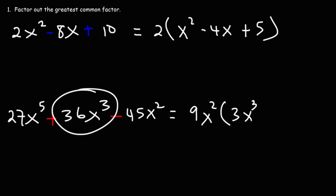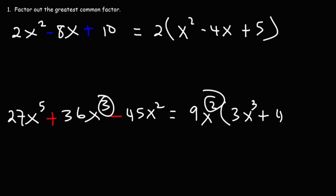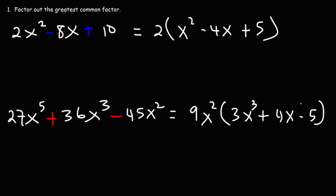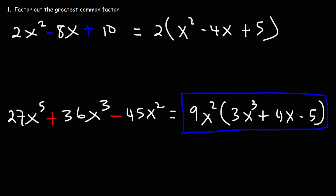Dividing 36x cubed by 9x squared: 36 divided by 9 is 4, and x cubed divided by x squared gives us x to the 1st, so we get 4x. Then negative 45x squared divided by 9x squared: negative 45 divided by 9 is negative 5, and x squared divided by x squared is 1, so we just get negative 5. So that's the answer for the fifth problem.